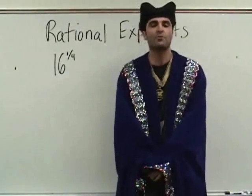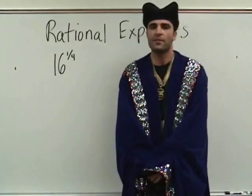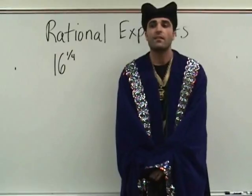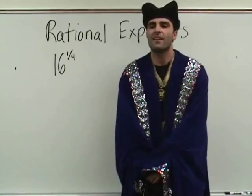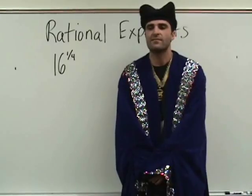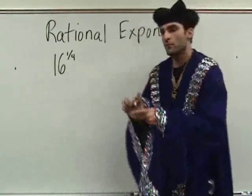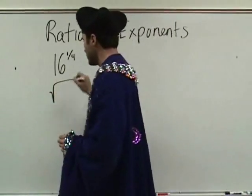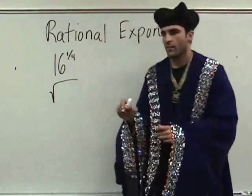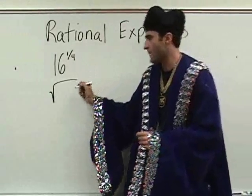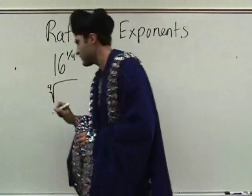All right. So, volunteer to describe what we do here. You put it in a square root. Put it in a root. So, we're going to create a root here. Take the denominator of the fraction. Put it outside the root — it becomes the power of the root. And then you put 16 in the middle.